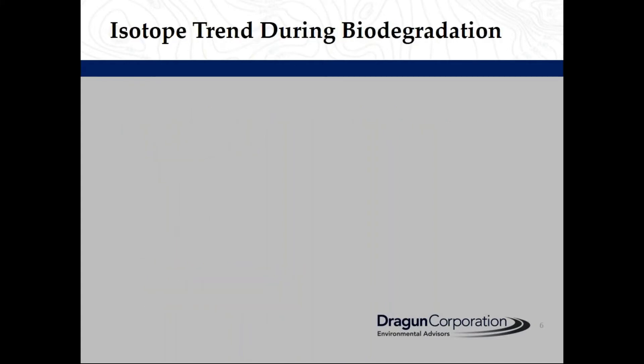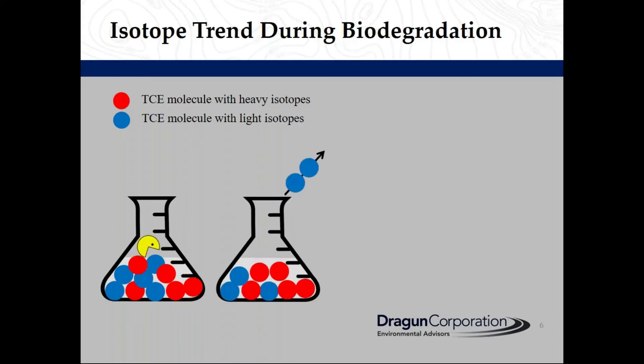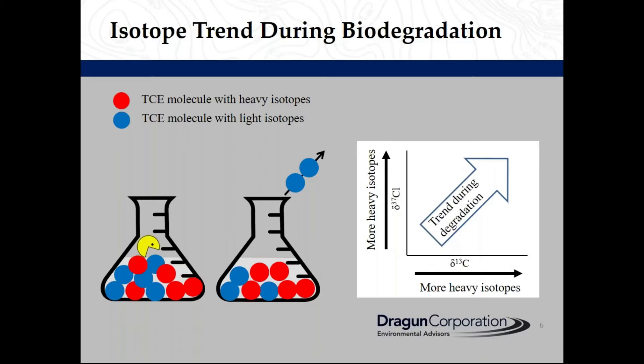Why does biodegradation change isotopic ratios significantly? Assume we have a solution that contains TCE molecules with light and heavy isotopes, and then we add bacteria to this solution. The bacteria breaks down the molecules with light isotopes, so the remaining solution becomes enriched in molecules with heavy isotopes over time. When we plot carbon versus chlorine isotopes, the trend is toward heavier isotopes.